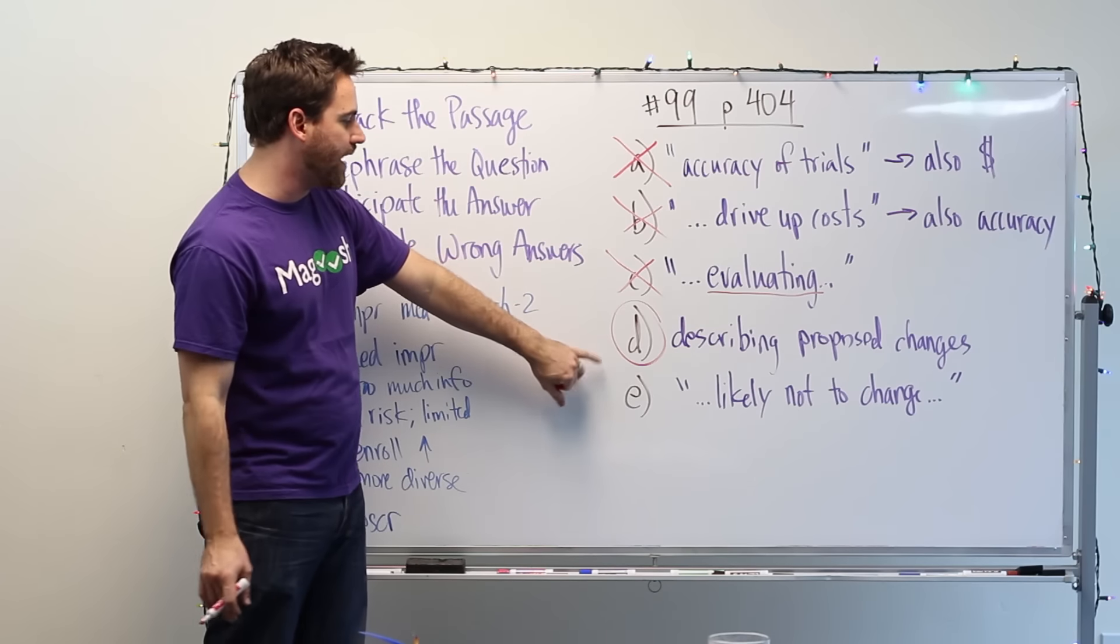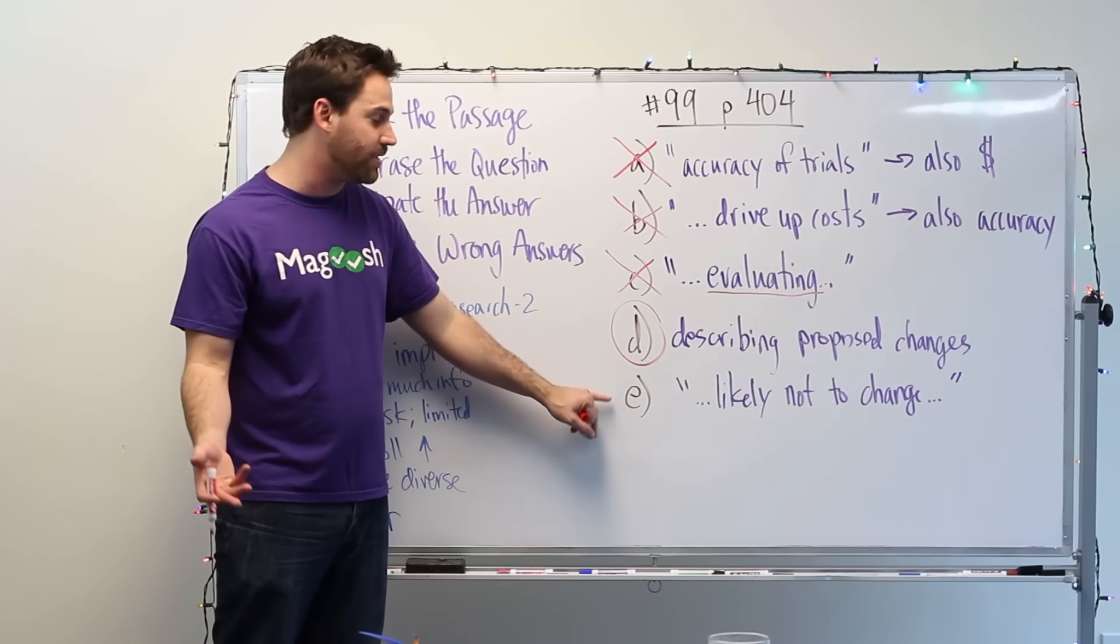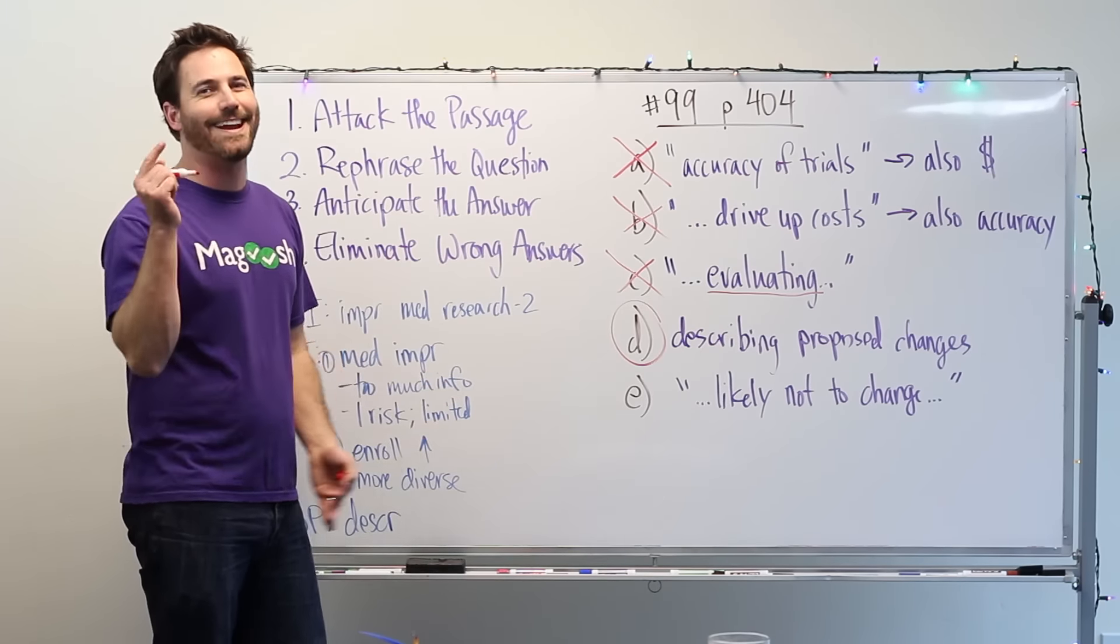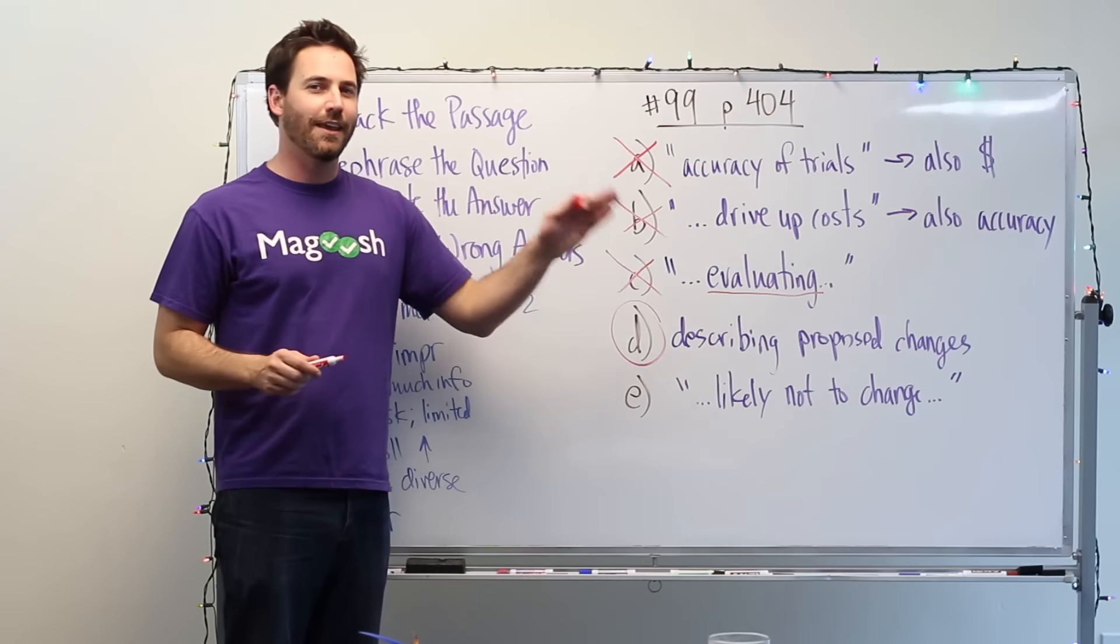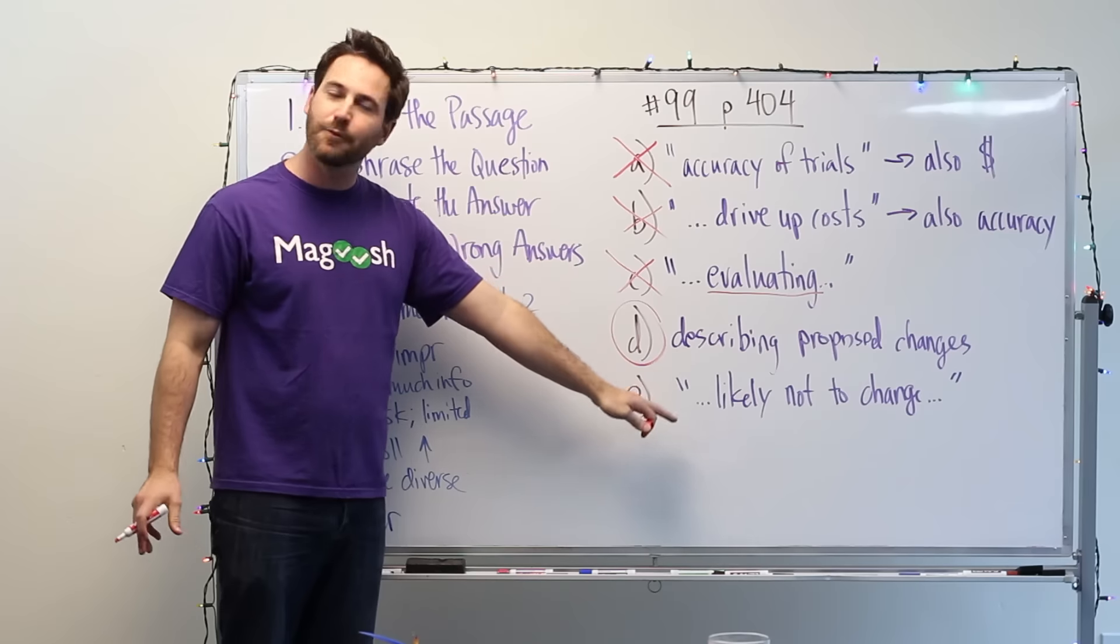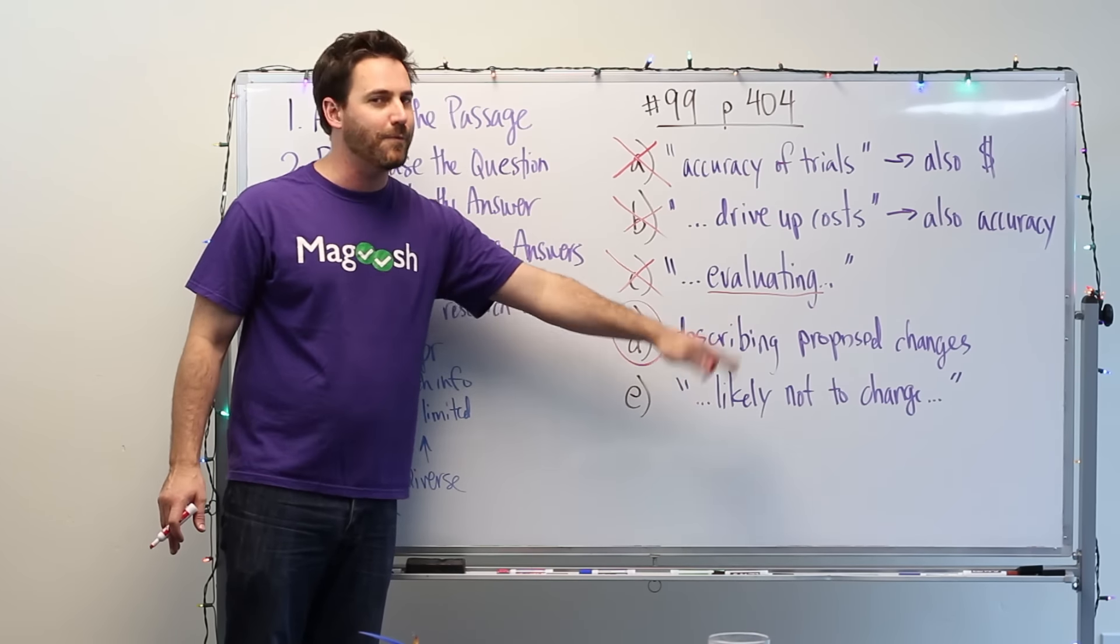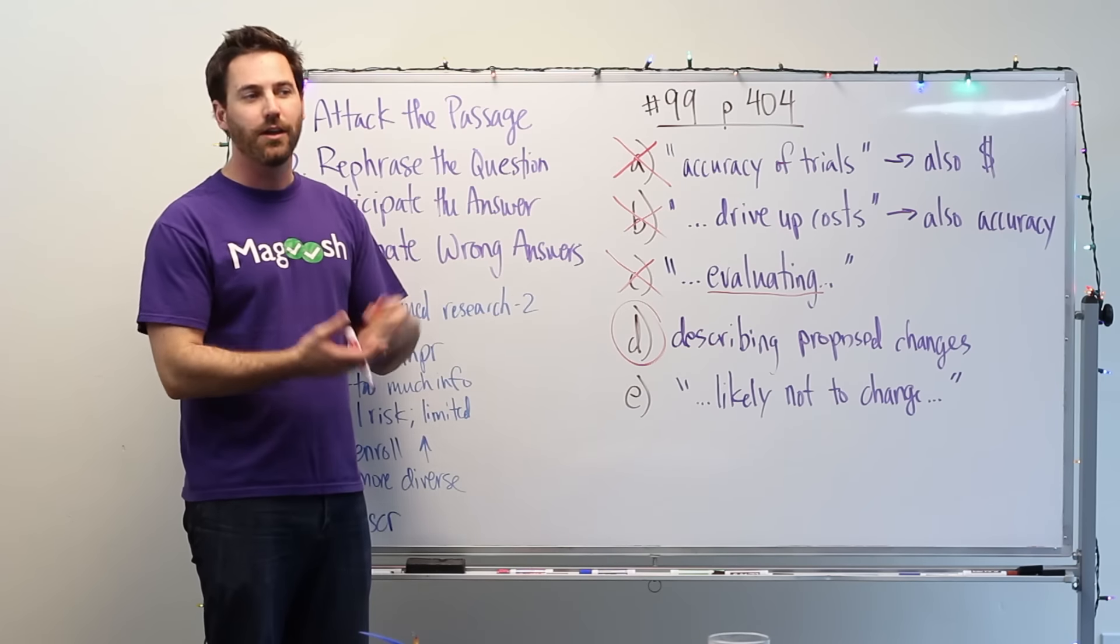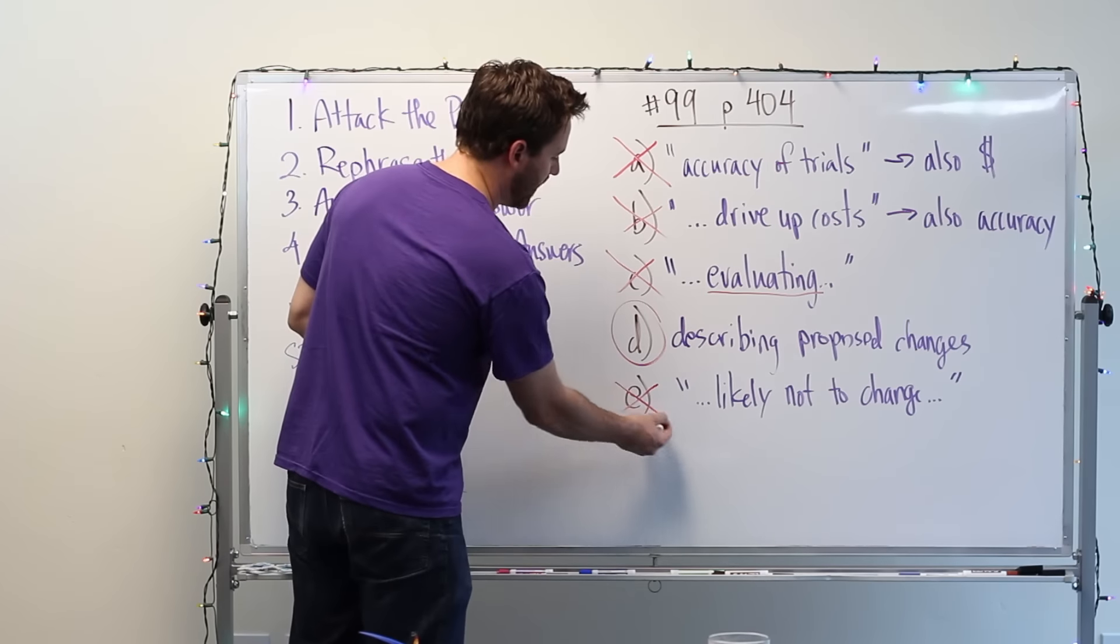When I first went through this, I was like D's probably right. I'm going to check E just to be sure. When I read E, I was like, Ooh, this is good. This is going to be really good. And then I got to the end of the answer choice and says likely not to change. So this is checking to see if you're actually reading the whole answer choice. If you just read the first part, you might think this is the right answer, but there's no opinion or no information about whether or not these changes that they're talking about will lead to any actual changes in medical research. So we can eliminate E.